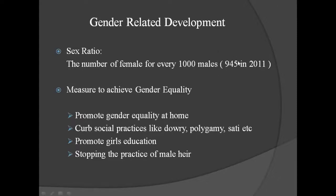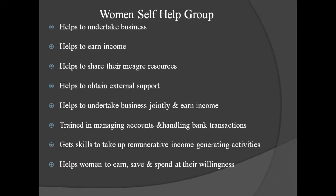Another problem is female feticide — killing the fetus inside the womb. When ultrasound scanning finds a female baby, they abort and kill it. To solve these problems, measures to achieve gender equality include: promote gender equality at home first, curb social practices like dowry, polygamy, and sati, promote girls' education, and stop the practice of male preference. To improve the condition of women and promote their participation in economic activities to achieve economic empowerment, women self-help groups came into effect.